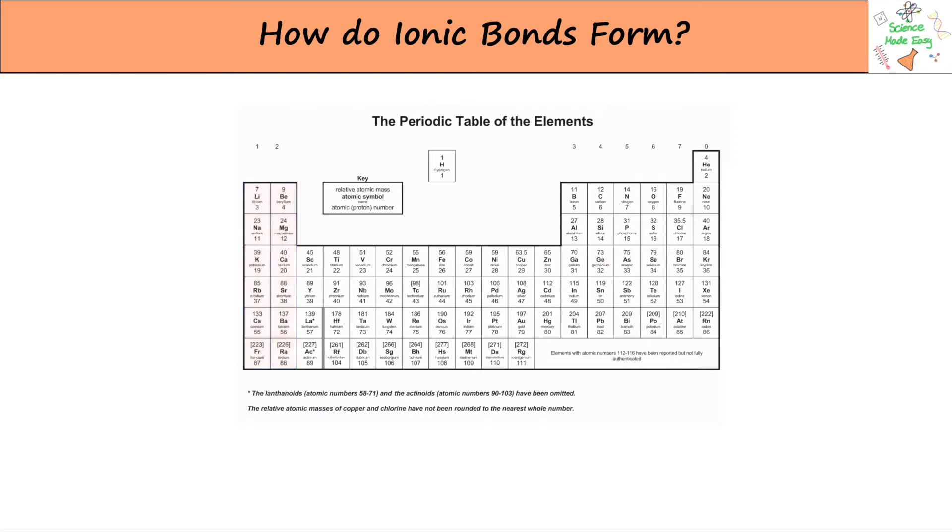Groups 1 and 2 and 6 and 7 most readily form ions as these are the most reactive groups. Metals don't have many electrons in their outer shell so it's easier for them to lose these few electrons than to gain lots of electrons from other atoms. This means that metals lose a shell, and the atom becomes stable as the shell before it is already full.